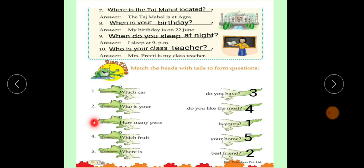Number 3. How many pens do you have? Tumhari paas kitne pen hai? Number 4. Which fruit do you like the most? Kaunsa fruit aapko sabse jyadha pasand hai?